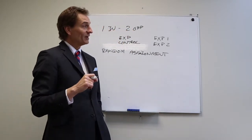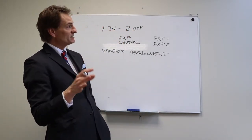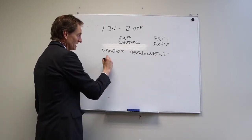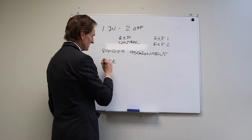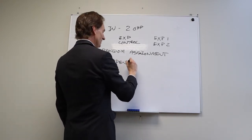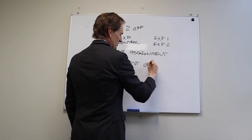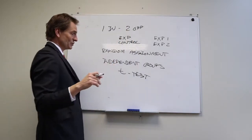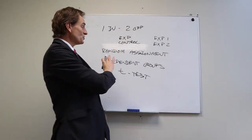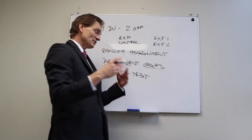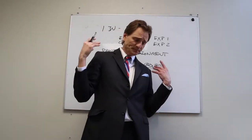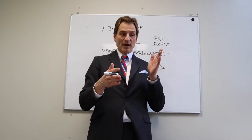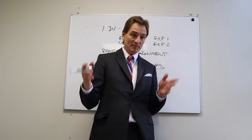The statistic we use in a one independent variable two-group design is called an independent groups t-test. You use a t-test when you have a two-group one independent variable design. The term 'independent groups' refers to the fact that membership in one group is independent of membership in the other.